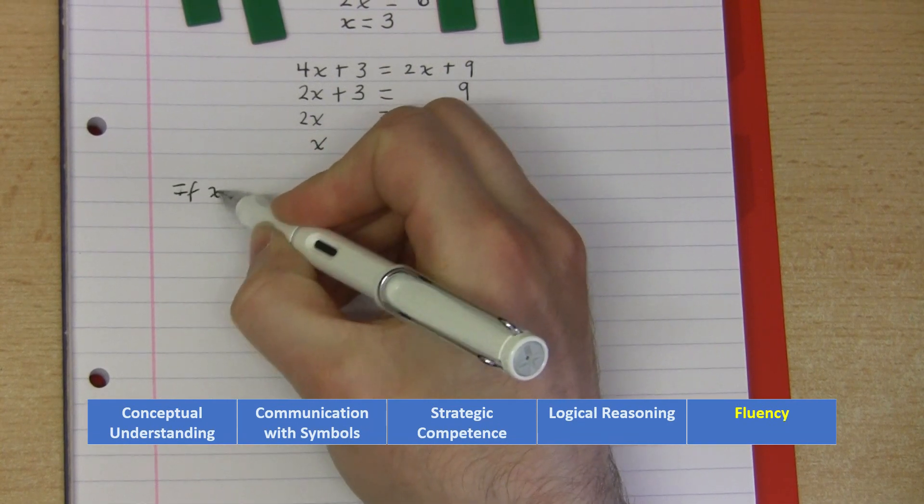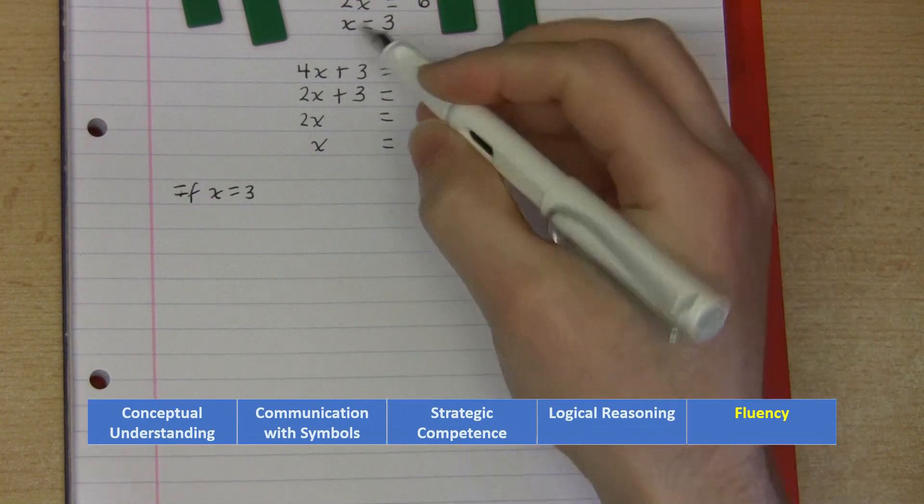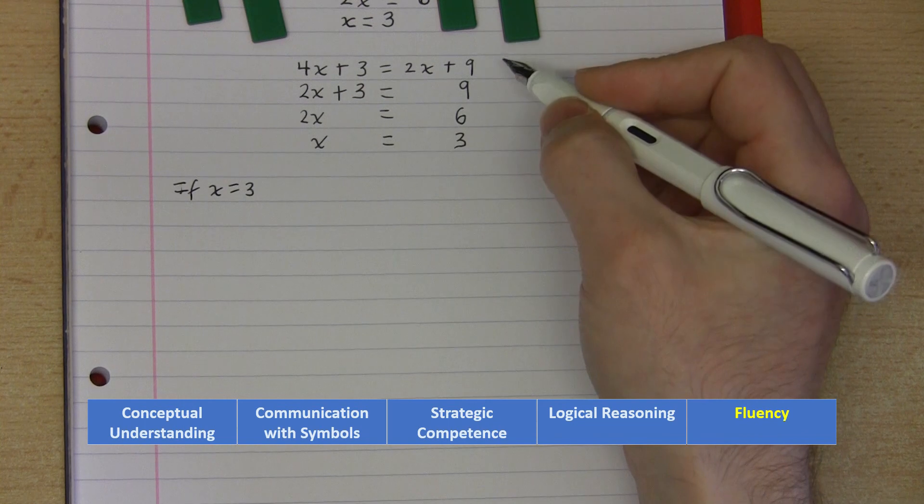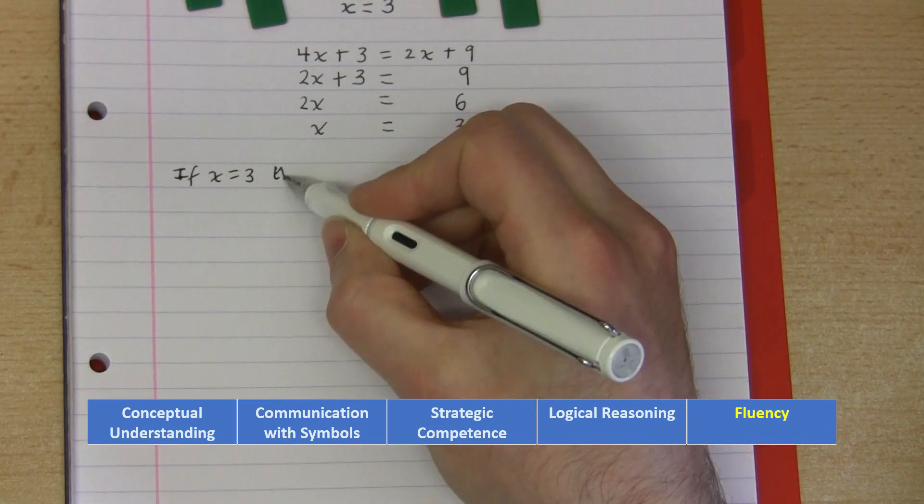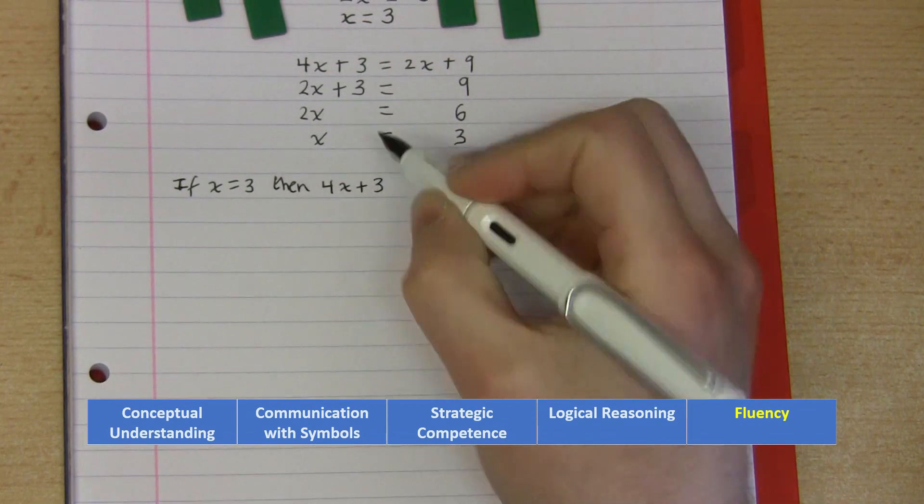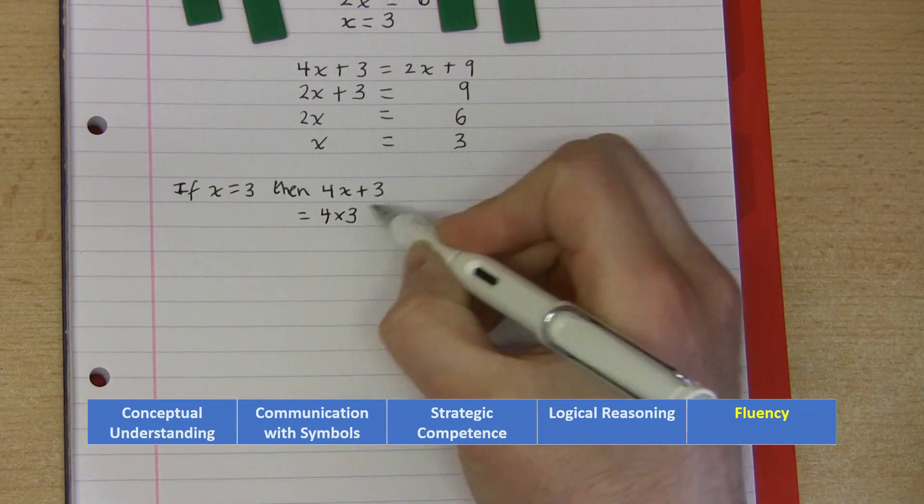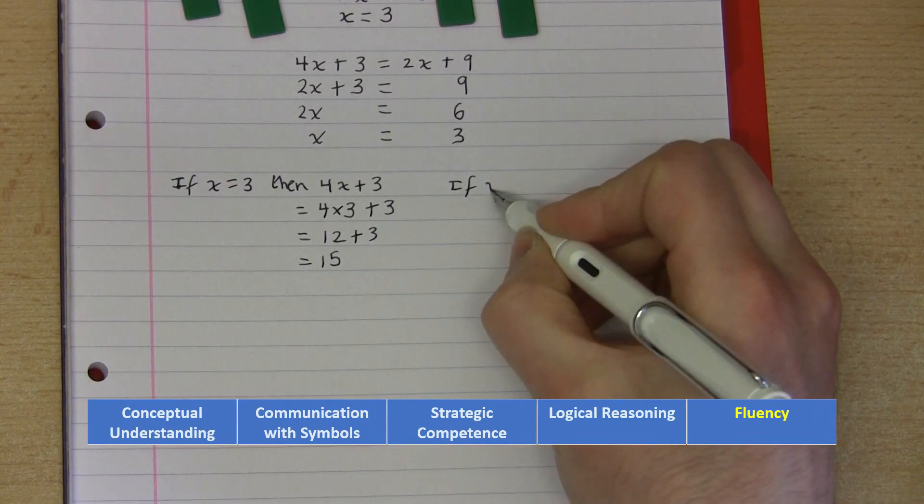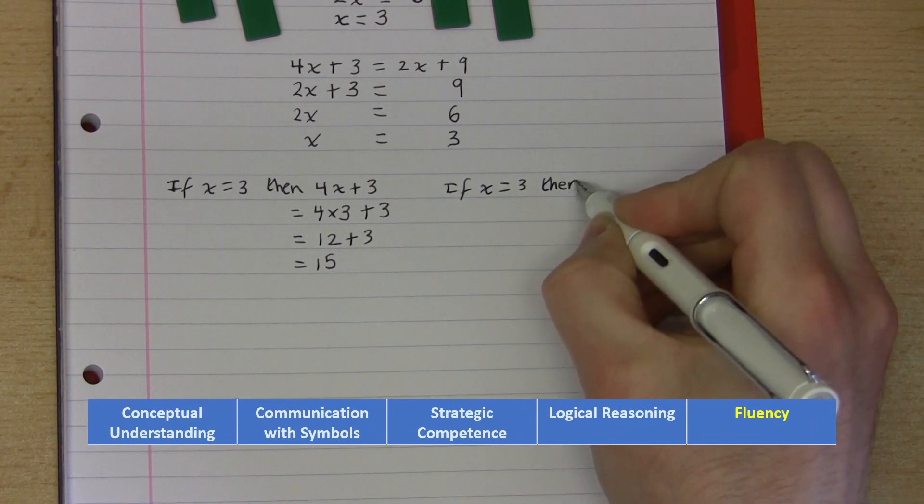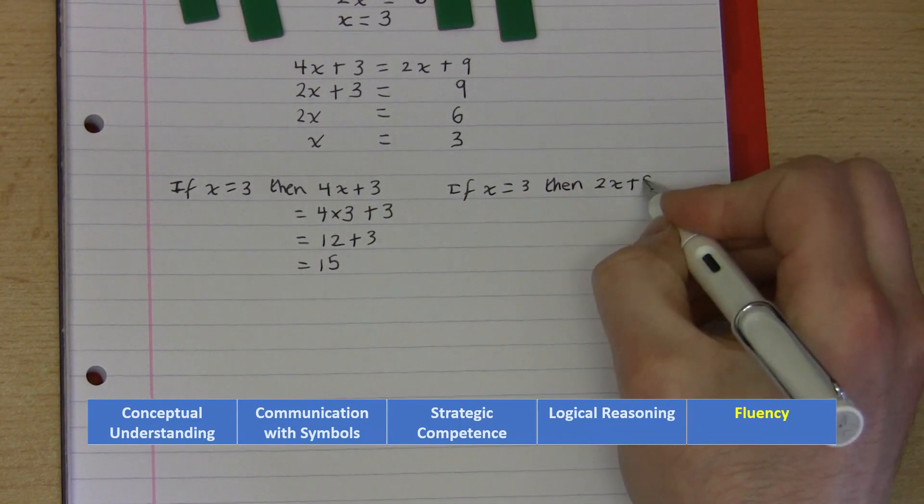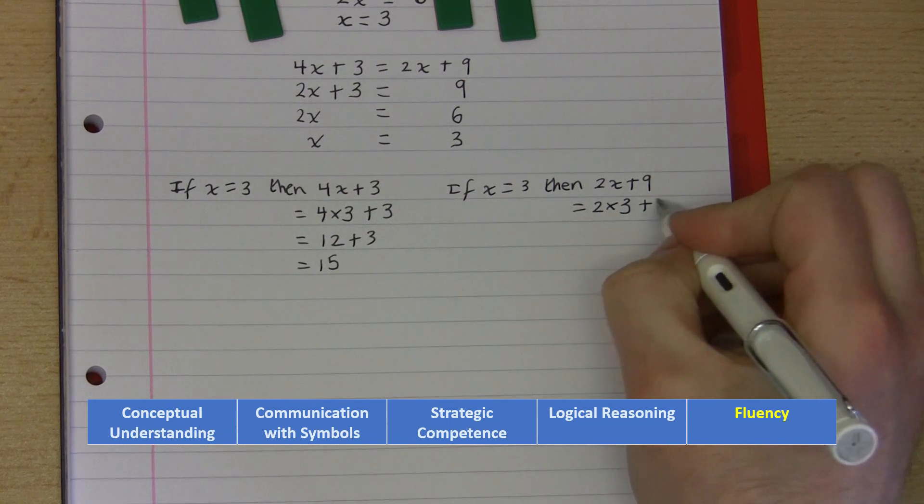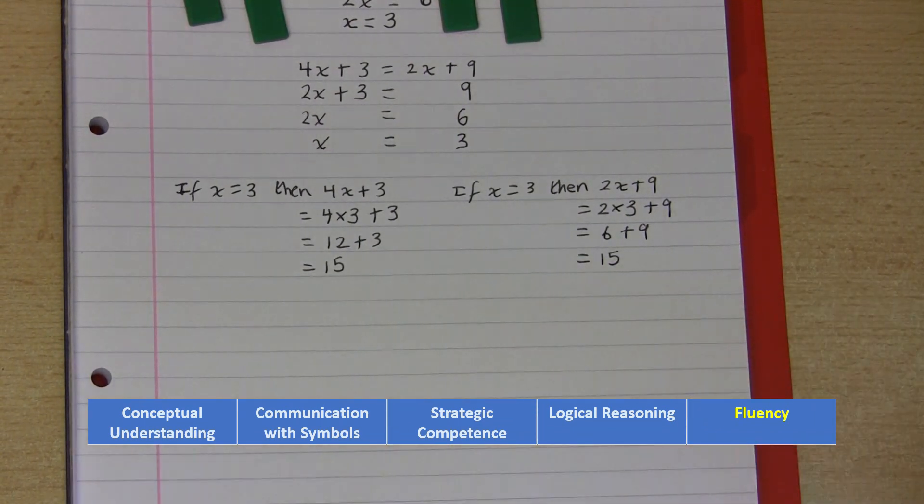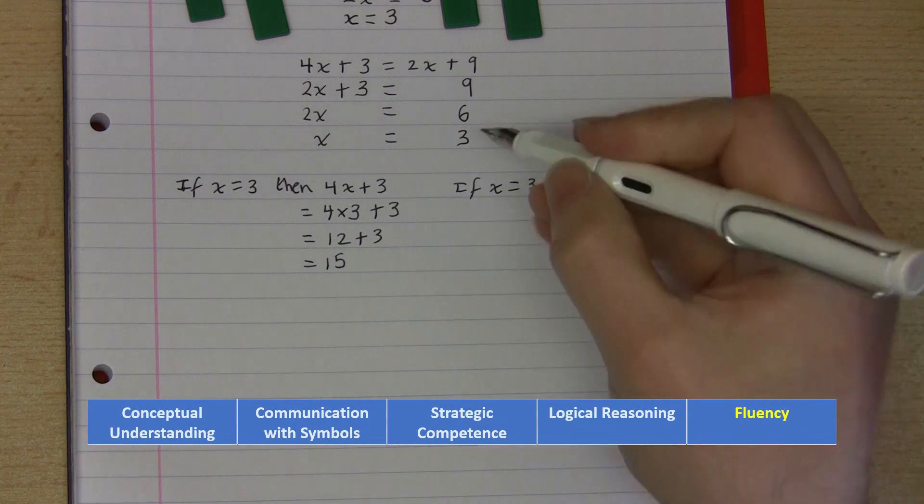Well if we think that x is equal to three, we could substitute this value back into the left hand side and the right hand side of the original equation and see if we obtain the same number. So if x is equal to three, then 4x plus 3, the left hand side of the equation, will be four multiplied by three and add another three, which is twelve and three, which is fifteen. And if x is still equal to three, then the right hand side of the original equation, the 2x plus 9, will be equal to two multiplied by three and then add on nine, which will be six and nine, which is also fifteen. Because I've had the same number twice, then I have verified that this is a valid solution.